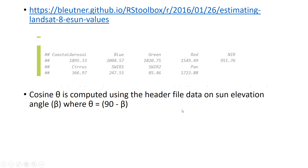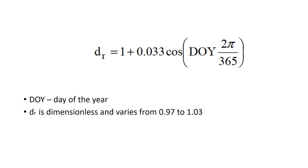The cosine of the solar incident angle is computed using the sun elevation angle from the header file metadata, where the angle equals 90 minus sun elevation. Each image has its own sun elevation at the time the footage was taken. The Earth-Sun distance is based on the day of the year, also found in metadata, and is dimensionless, varying from 0.97 to 1.03.